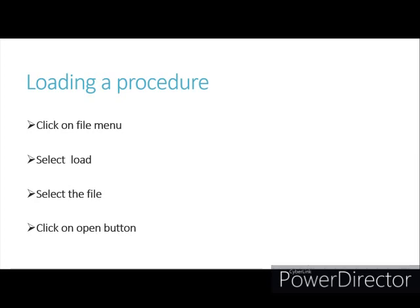Next, loading a procedure. After saving a procedure, the next time you want to load it, follow these steps: first click on the File menu and choose the Load option. A dialog box will appear. From the dialog box, select your file name, then click the Open button to load the procedure.